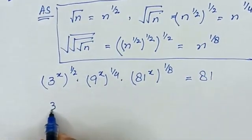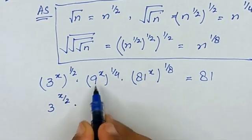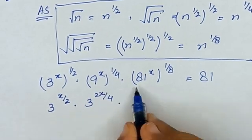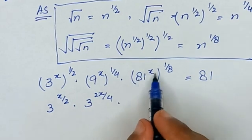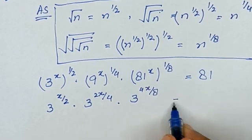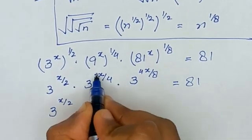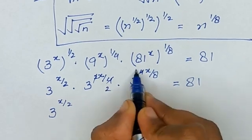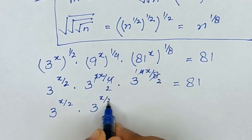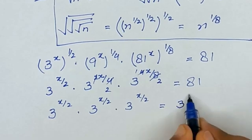Using the exponential rule, it becomes 3 raised to the power x divided by 2. Since 9 equals 3 squared, it becomes 3 raised to the power 2x divided by 4. Since 81 equals 3 to the power 4, it becomes 3 raised to the power 4x divided by 8. So we have 3 raised to the power x/2, plus 3 raised to the power x/2, and we can write 81 as 3 raised to the power 4.